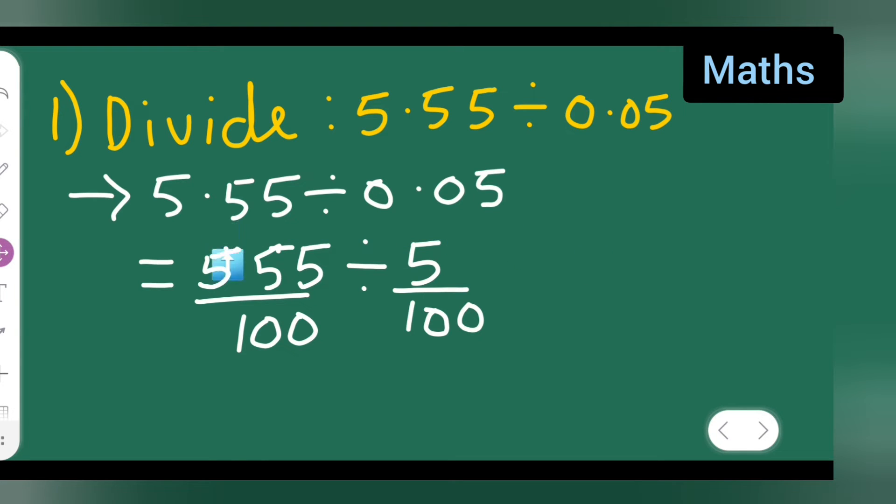Now this is 555 upon 100 divided by 5 upon 100. So what we are going to do is write down 555 upon 100, multiply it with the reciprocal of the other, 100 upon 5. So we have to multiply this with the reciprocal of this. This is the best way to divide.